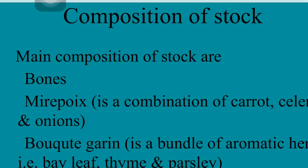The second component is vegetables, which are known as mirepoix. Mirepoix is a combination of three types of vegetables: carrots, celery, and onion. We use it in stock so that it will give good aromatic flavors. The ratio of mirepoix is 50-25-25: 50 percent onion, 25 percent carrots, 25 percent celery — a ratio of 2:1:1.